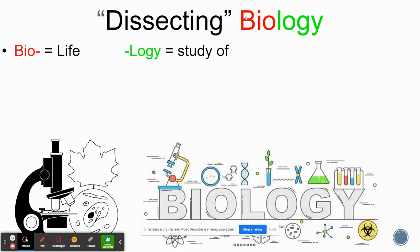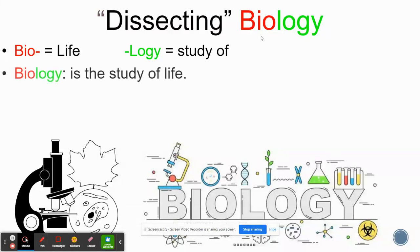If you can start to understand what different parts of words mean, when you see these parts again, you'll be able to make a reasonable guess as to what a word might mean, even without having seen its definition before. Biology: the study of living things, or life.